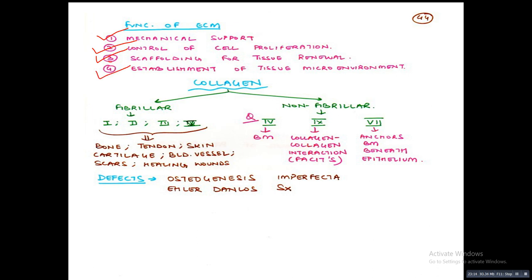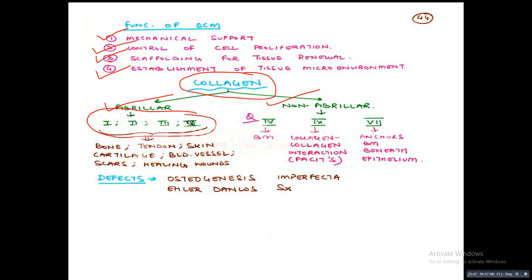Collagen has two main types: fibrillar and non-fibrillar. Under fibrillar type there are four main types — collagen types 1, 2, 3, and 5 — present in bone, tendon, skin, cartilage, blood vessels, scars, and healing tissue. Under non-fibrillar type: type 4 collagen is the major collagen in the basement membrane; type 9 collagen is involved in collagen-to-collagen interaction; and type 7 collagen anchors the basement membrane beneath the epithelium.